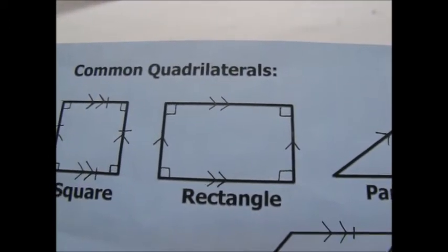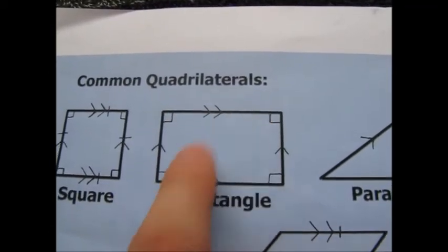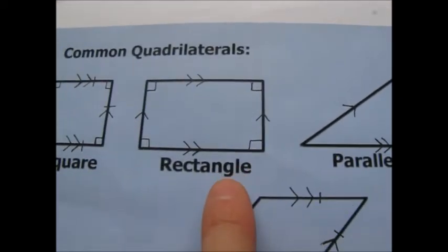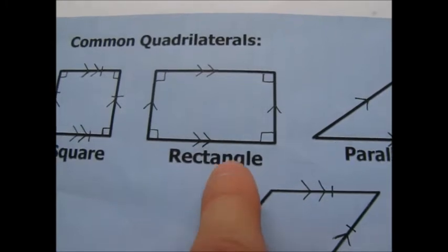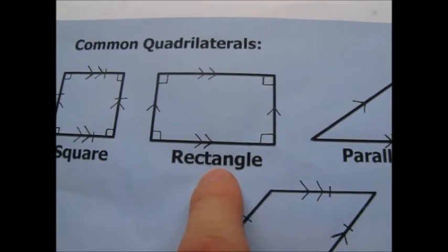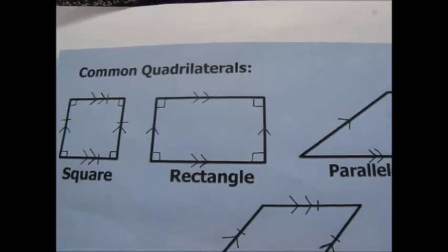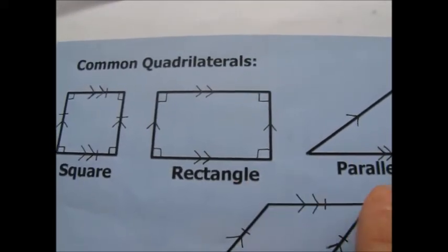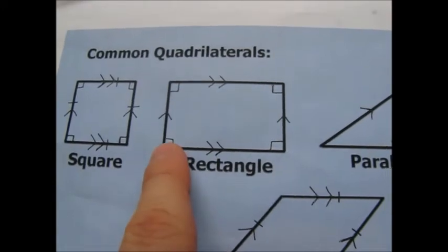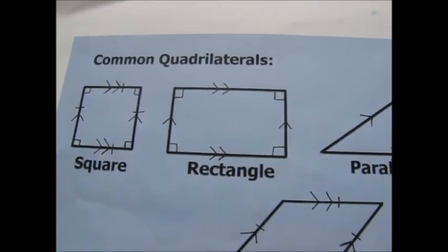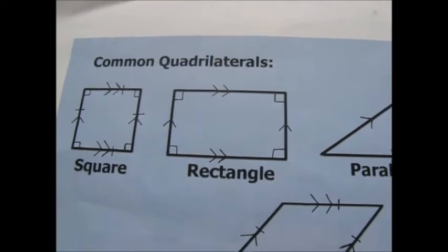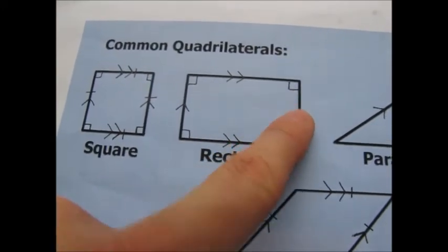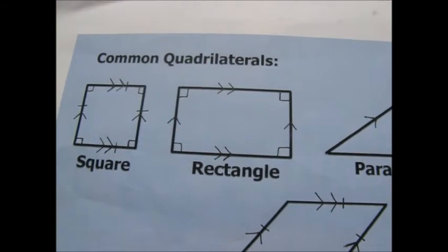Moving to the rectangle: it also has two pairs of parallel sides, so a rectangle is a special type of parallelogram — you'd get the mark for writing that in an exam. But why is it called a rectangle and not just a parallelogram? Because it has four right angles, or four pairs of perpendicular sides — each side is perpendicular to the adjacent one.